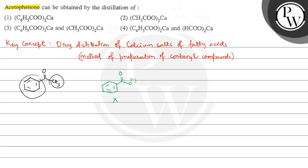we have calcium acetate group. Now let's talk about the second one - here we have calcium acetate only. This is calcium acetate. That is why this also cannot give us acetophenone.